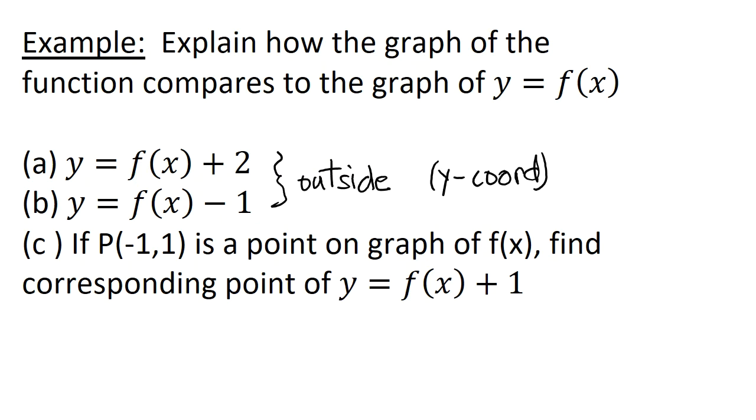Now for this part c. If I have the point negative 1, 1 on my original function—I said that wrong. So here's my value on my original function. My original function is just x, y. That point is going to become, well, it's outside the argument of the function, so it does not change the x value at all. But it does—y equals f of x—it adds 1 to the y value. So the point (-1, 1) is going to become (-1, 2). And let's look on the graph.